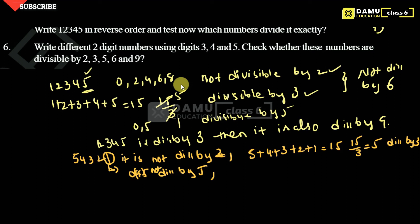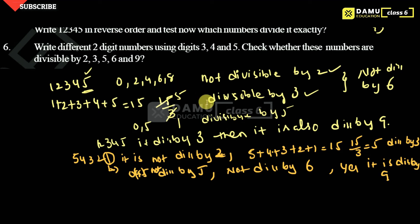For 5: the units digit of 54321 is 1, and it should be 0 or 5, so it is not divisible by 5. For 6: it is not divisible by 2, so it is not divisible by 6. For 9: since it is divisible by 3, it is also divisible by 9. If a number is divisible by 3, it is also divisible by 9.